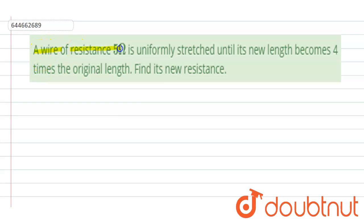A wire of resistance 5 ohm is uniformly stretched until its length becomes four times the original length. Find its new resistance. So here, l' equals 4l, and original resistance is given as 5 ohm. We have to find new resistance.